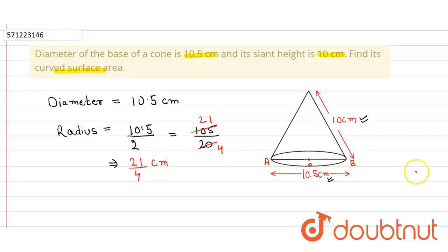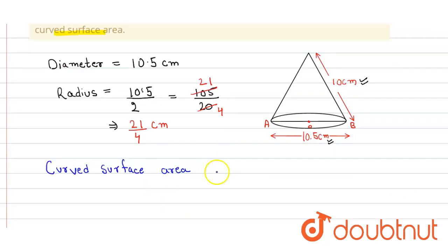Now we have to find the curved surface area. The curved surface area of a cone is equal to π r l.